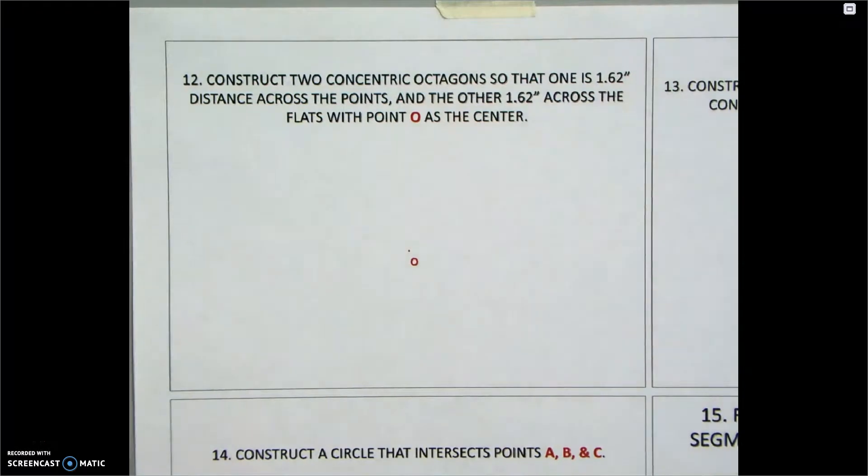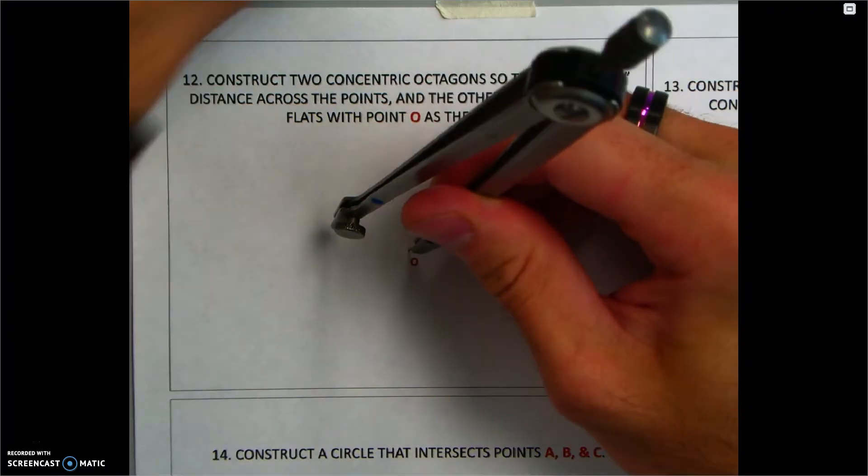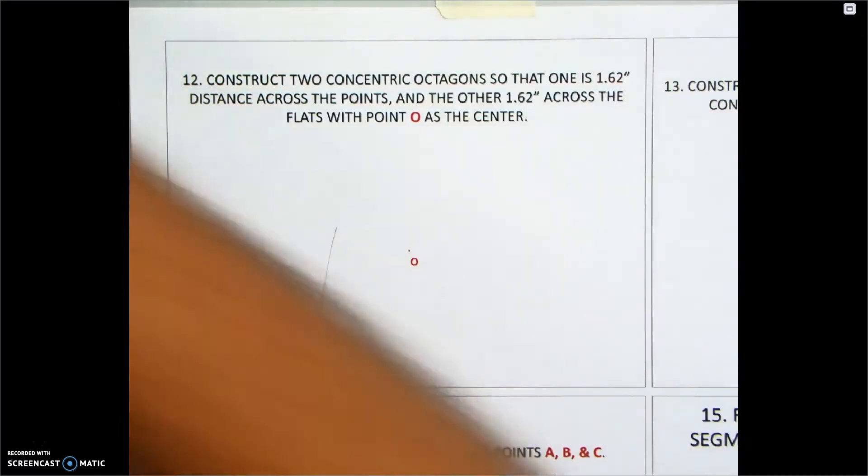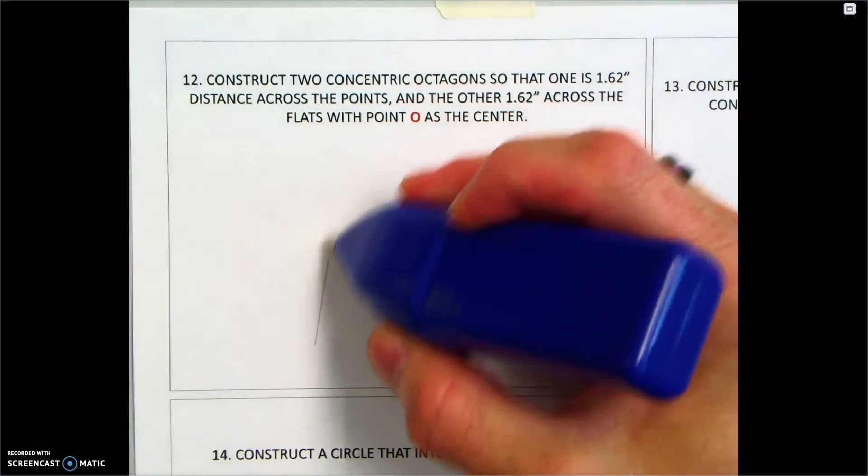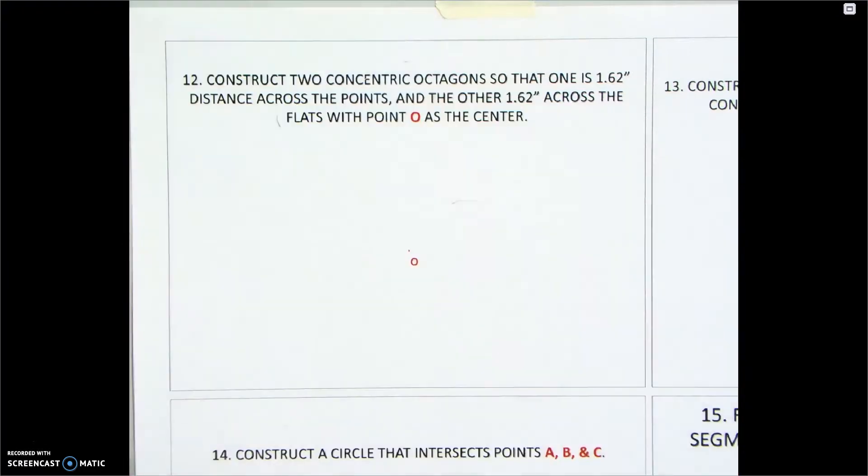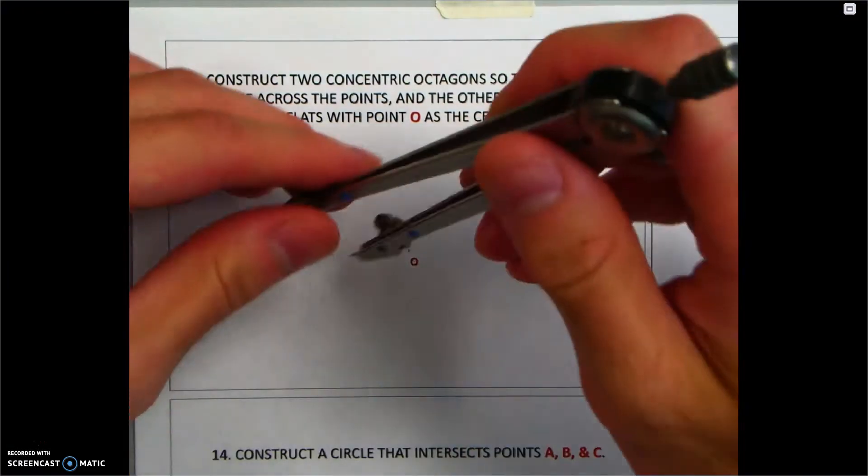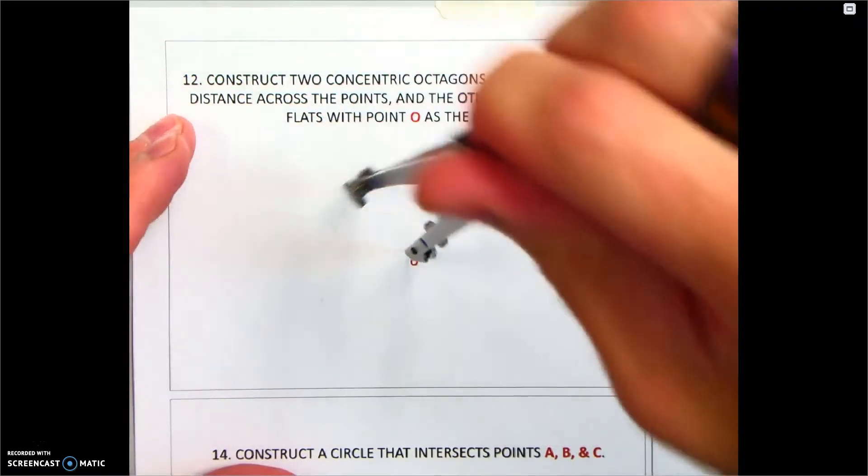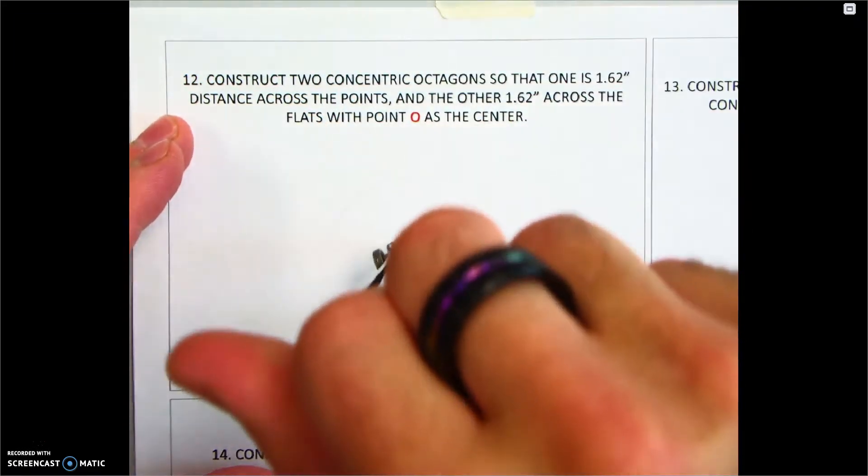I'm going to start with a 13 sixteenths radius. Put the pin of the compass there at point O. That's a bummer. Let's try that again. Put the pin of the compass and create our construction circle.